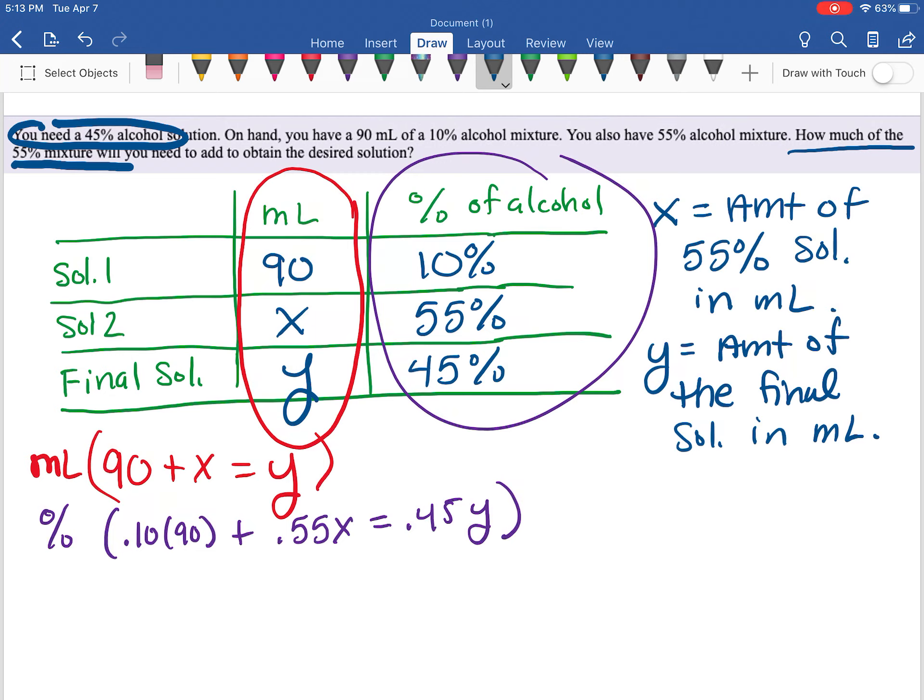So I'm going to take and everywhere I see y in the second equation, I'm going to replace y with 90 plus x.